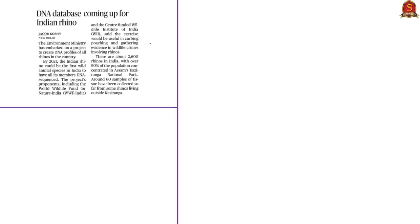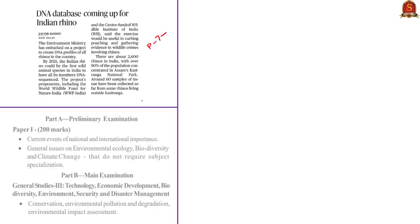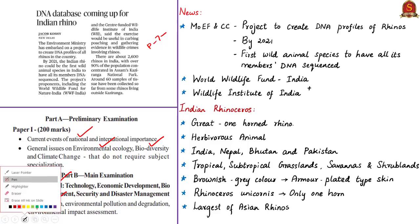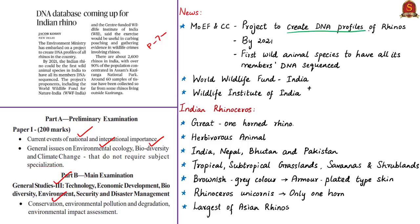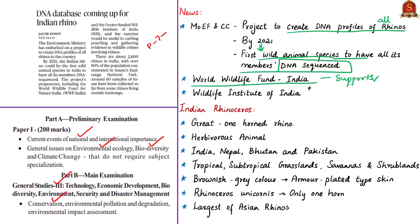The next article is about the Indian rhinoceros, appearing on page 7 in all editions. It is relevant in prelims under current events of national importance and environmental ecology and biodiversity, and in mains under GS Paper 3 in conservation. The article talks about the Environment Ministry's project to create DNA profiles for all rhinos in the country by 2021, supported by WWF India and the Wildlife Institute of India. This will make the Indian rhino the first wild animal species in India to have all its members DNA sequenced, and will help curb poaching and gather evidence in wildlife crimes.